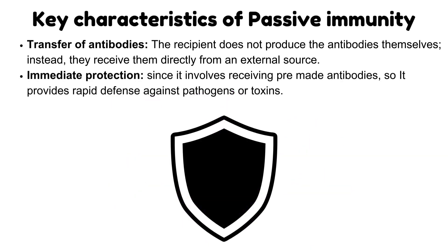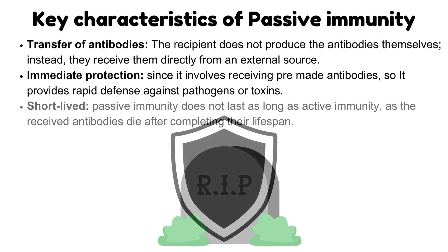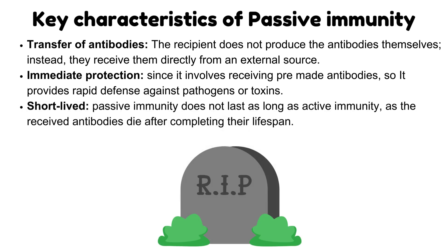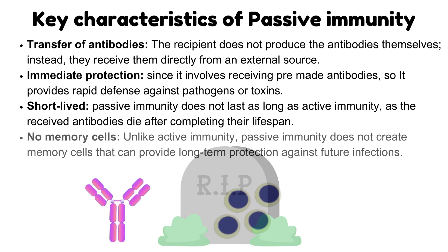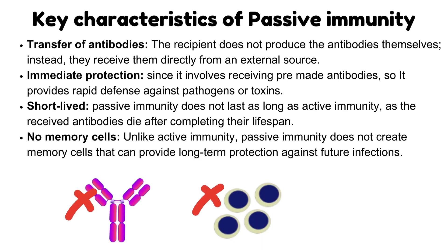Key characteristics of passive immunity: Immediate protection — since it involves receiving pre-made antibodies, it provides rapid defense against pathogens or toxins. Short-lived — passive immunity does not last as long as active immunity because the received antibodies die after completing their lifespan. No memory cells — unlike active immunity, passive immunity does not create memory cells that can provide long-term protection against future infections.